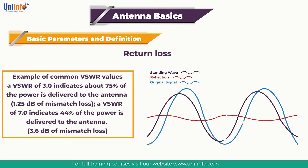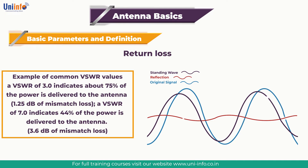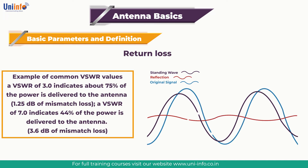As examples: a VSWR of 3.0 indicates about 75% of the power is delivered to the antenna, corresponding to 1.25 dB of mismatch loss. A VSWR of 7.0 indicates 44% of the power is delivered to the antenna, corresponding to 3.6 dB of mismatch loss. A VSWR of 6 or more is generally too high and needs to be improved. Power reflected by an antenna on a transmission line interferes with forward-traveling power, creating a standing voltage wave evaluated by the VSWR.